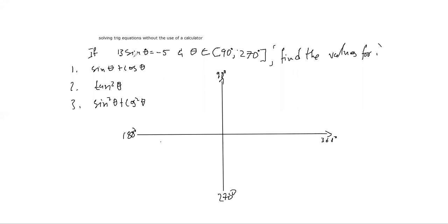We are given a condition: if 13 sine theta equals minus 5 and theta is between 90 degrees and 270 degrees, find the values for sine theta plus cos theta, tan squared theta, and sine squared theta plus cos squared theta.